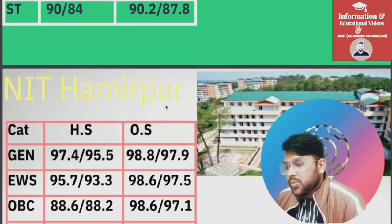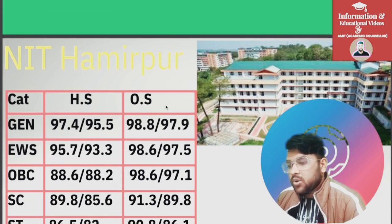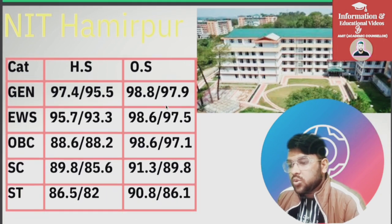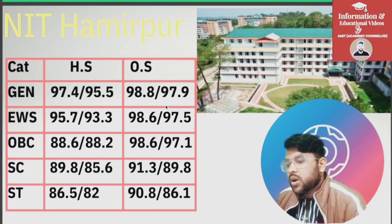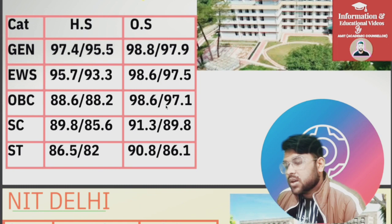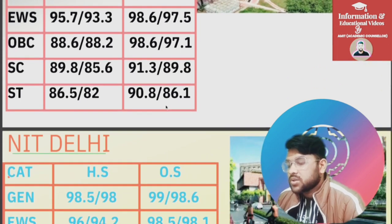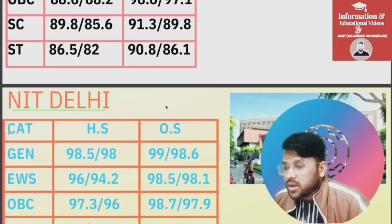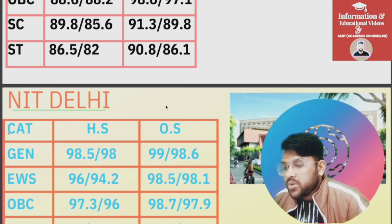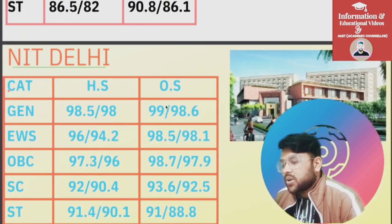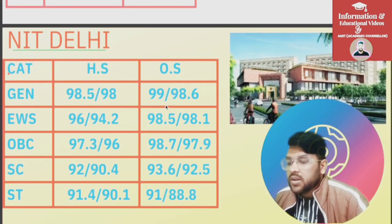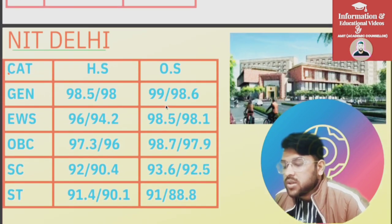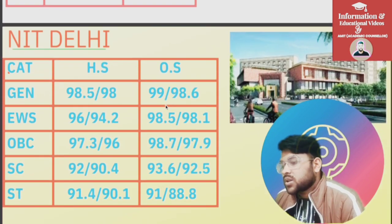For NIT Hamirpur: General 98.8, EWS 98.6, OBC 98.6, SC 91.3, ST 90.8 percentile. For NIT Delhi: General 99, EWS 98.5, OBC 98.7, SC 93.6, ST 91 percentile.